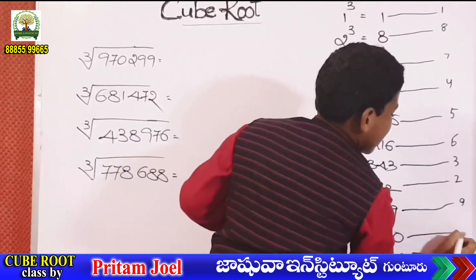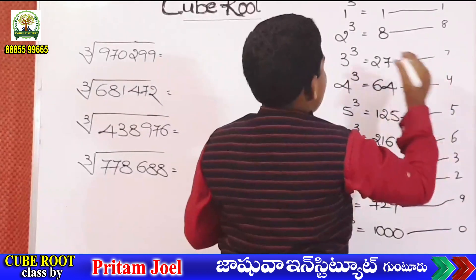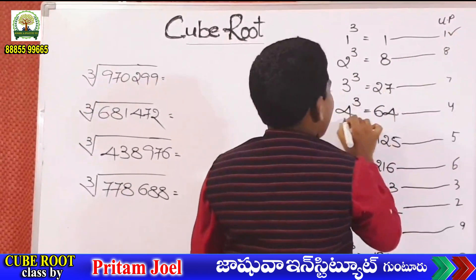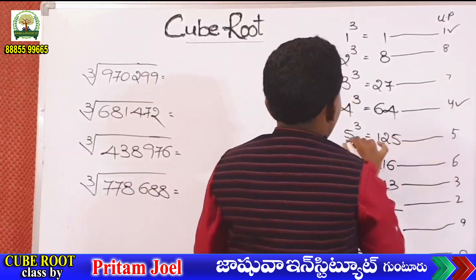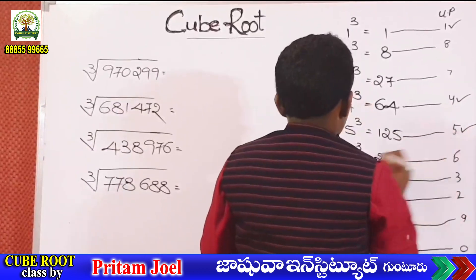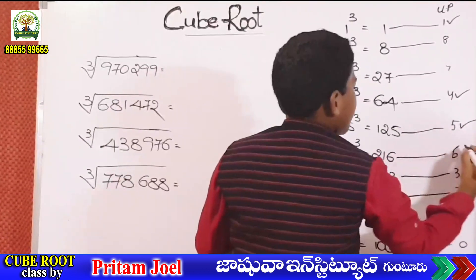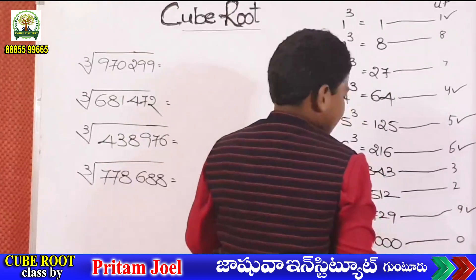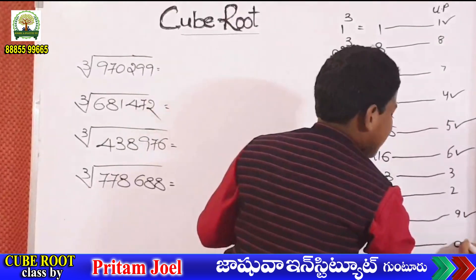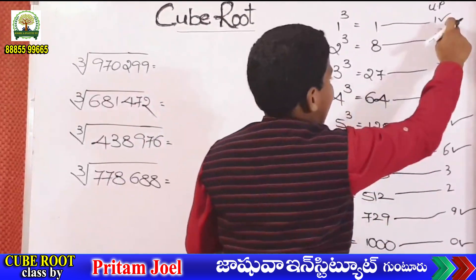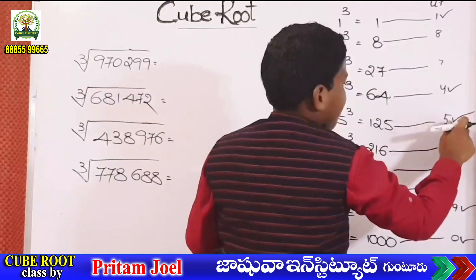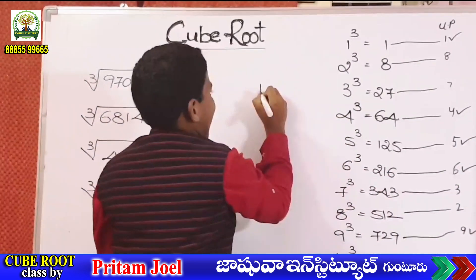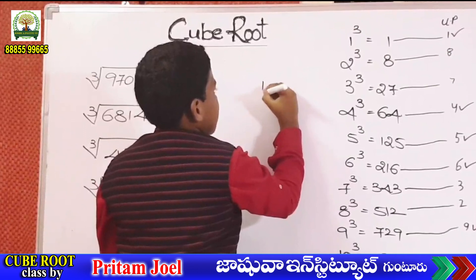The unit digit of 1 cube is 1, 4 cube is 4, 5 cube is 5, 6 cube is 6, 9 cube is 9, 10 cube is 0. So 1, 4, 5, 6, 9, and 0 — the unit digits are the same.